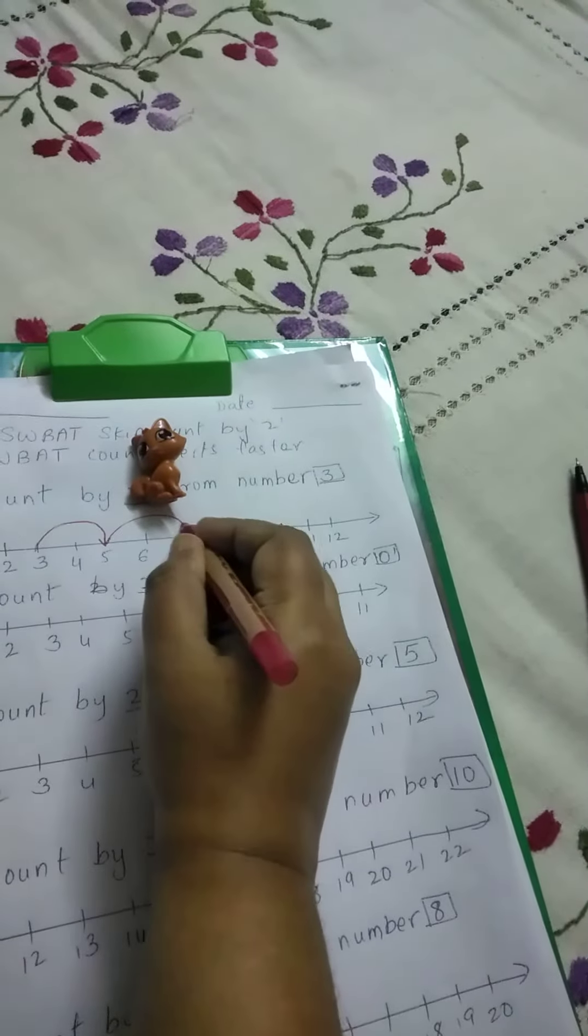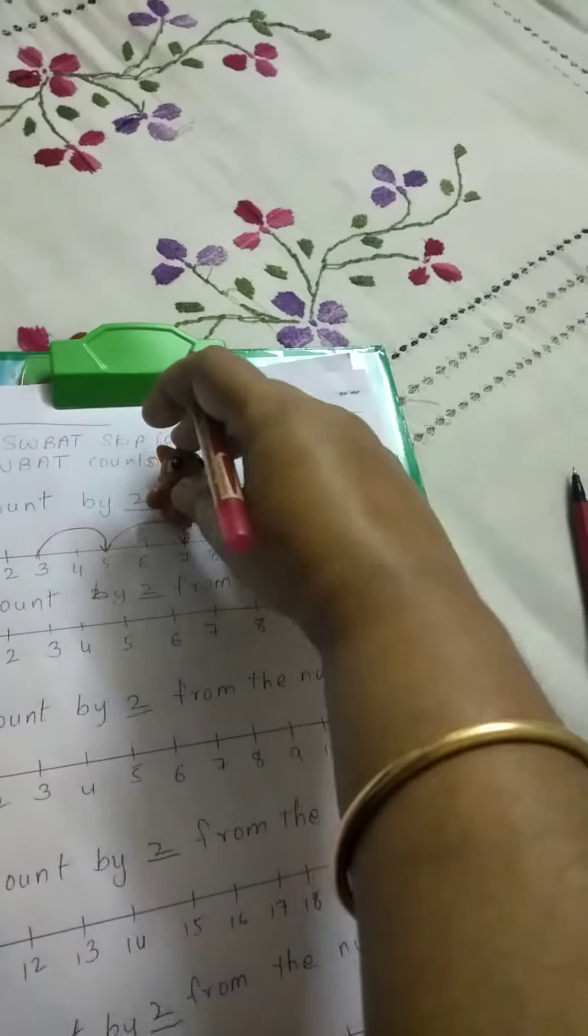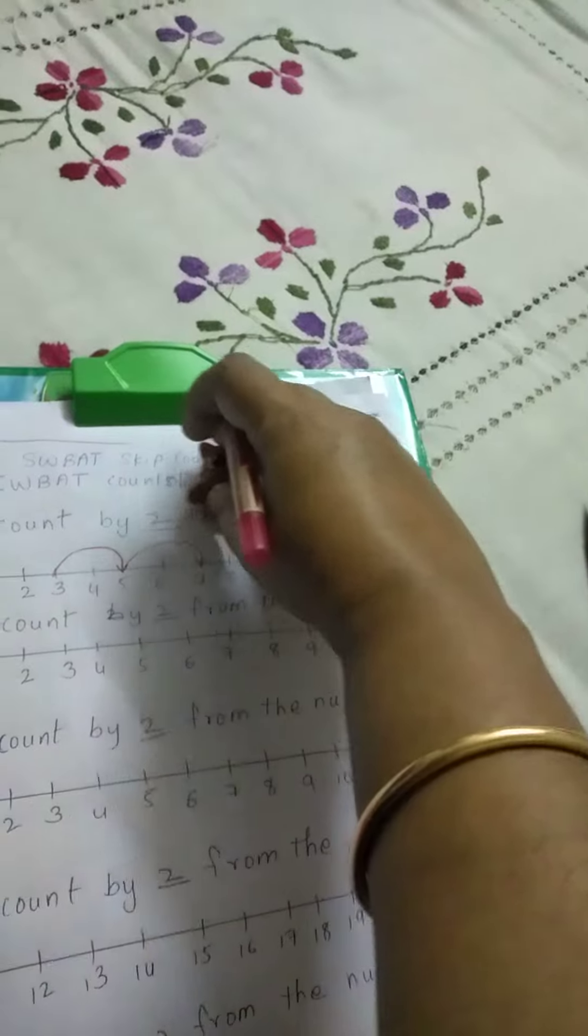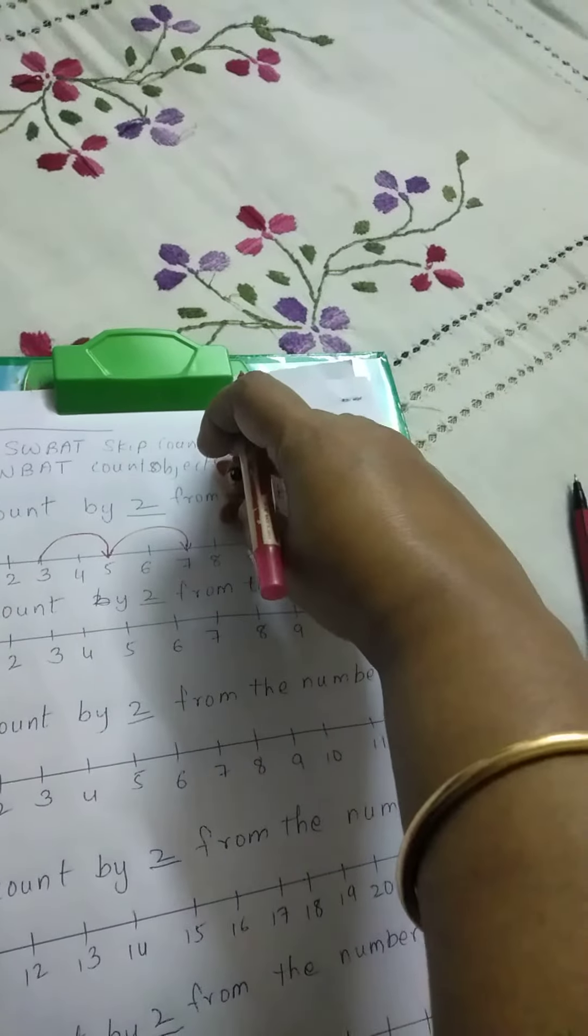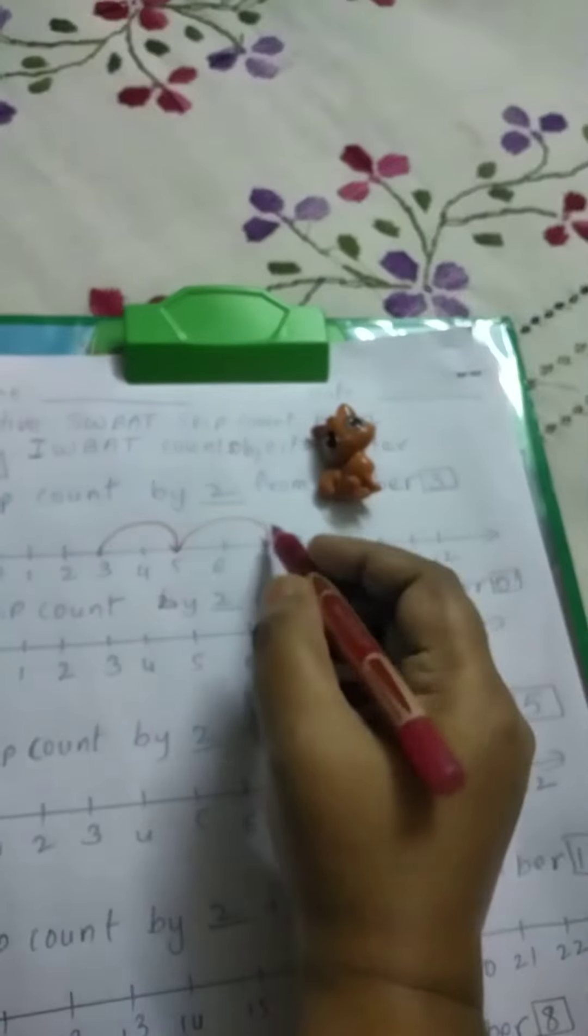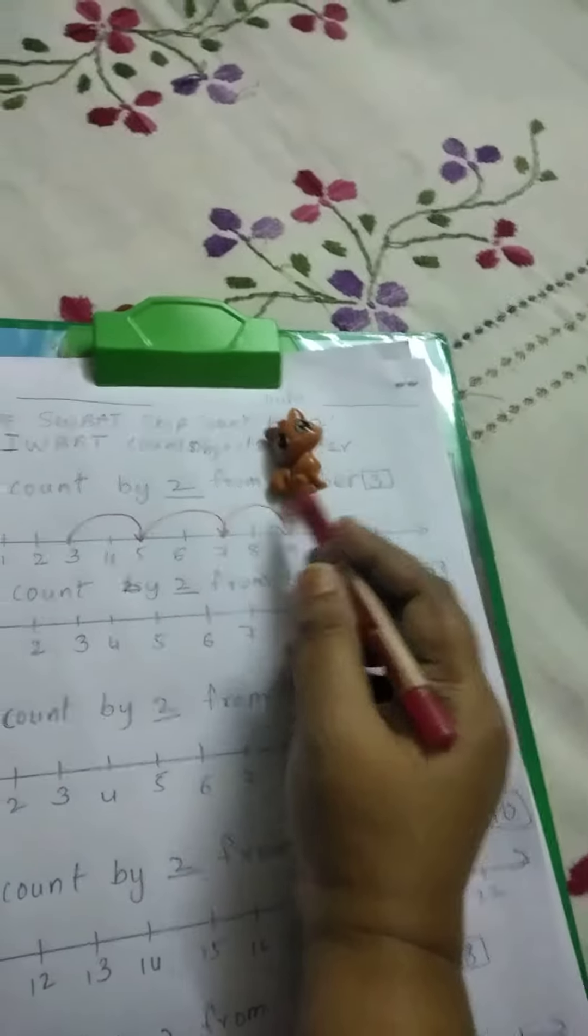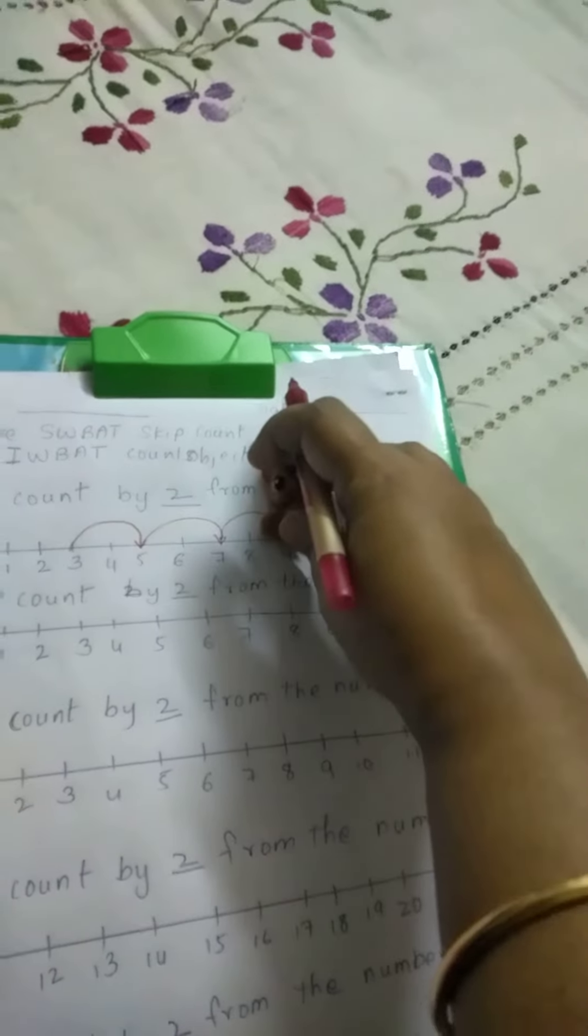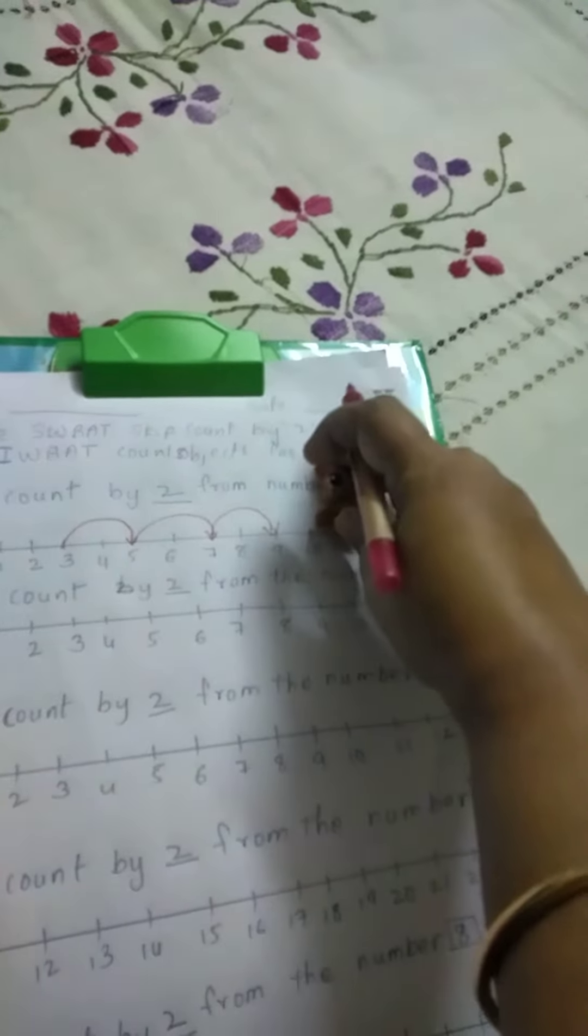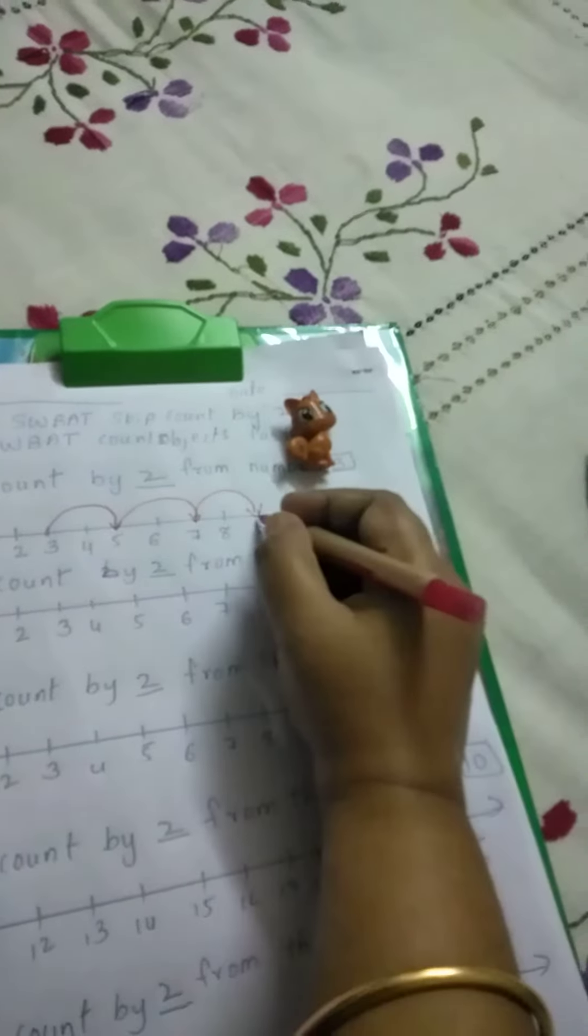Then kitty wants to jump 2 more numbers, so 7 to 9. Kitty has jumped up to number 9. Again she wants to jump 2 steps, so 10, 11. So right now kitty is on number 11.